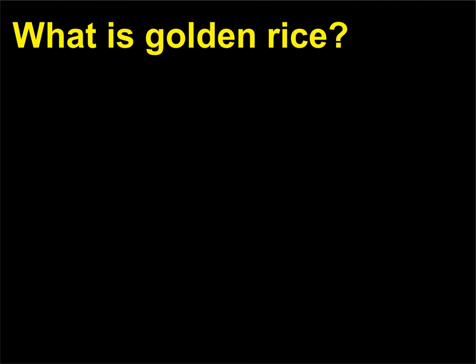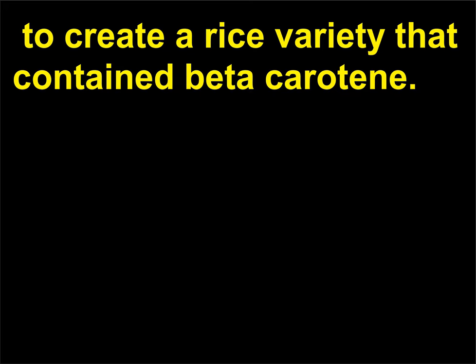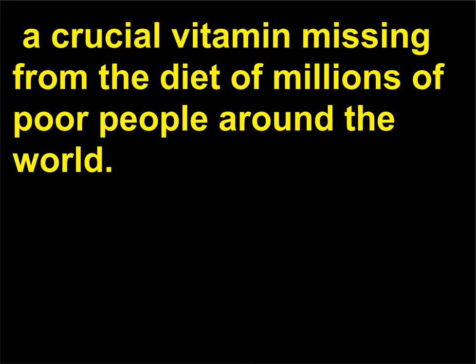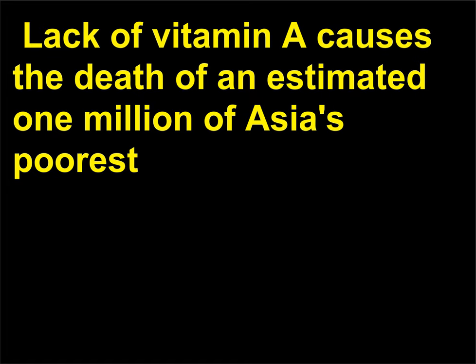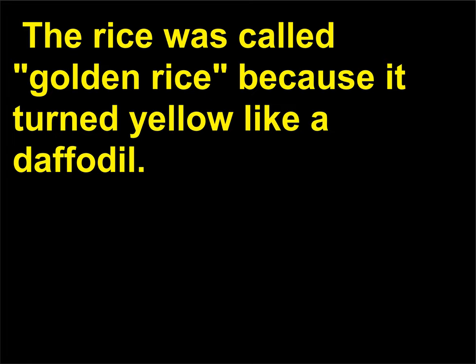What is golden rice? In 2000, scientists used three genes — two from a daffodil and one from a bacterium — to create a rice variety that contained beta-carotene. The importance of this is that in the human body, beta-carotene is converted to vitamin A, a crucial vitamin missing from the diet of millions of poor people around the world. Lack of vitamin A causes the death of an estimated 1 million of Asia's poorest children due to weakened immune systems; vitamin A deficiency is also linked to blindness. The rice was called golden rice because it turned yellow like a daffodil.